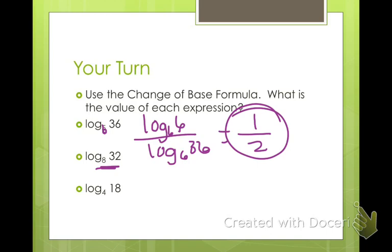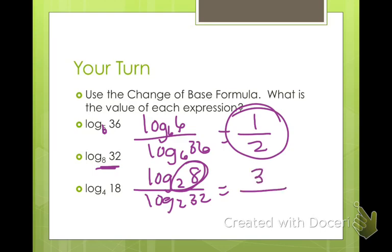What about 8 and 32? Do they have anything in common? They have 2 in common. So log base 2 of 8 divided by log base 2 of 32. 2 to what power makes 8? I'm pretty sure that's 3. 2, 4, 8. And to the 5th power is 32. So there's that one. And then 4 and 18, I want you to go ahead and try that one. It's going to be good.